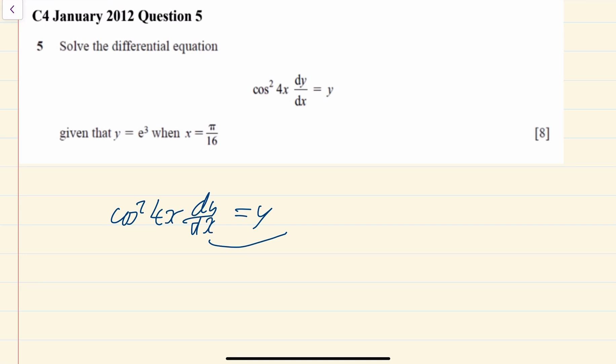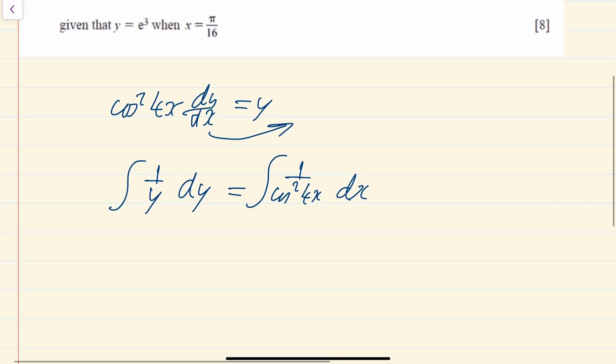So what I'm going to do first of all, I'm going to bring this dx across. So I'm going to leave my dy. My dx is going to go across here. My y is going to go across, so it's now going to be 1 over y. And my cos squared is going to go across, so it's going to be 1 over cos squared of 4x. And then you put an integration sign and that makes it all mathematically correct.